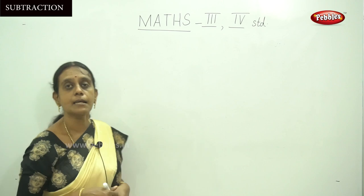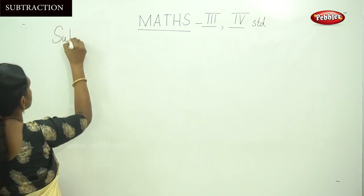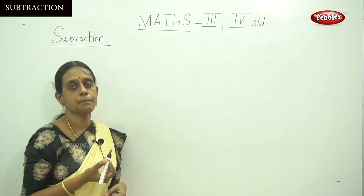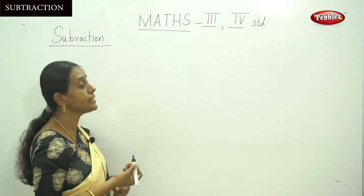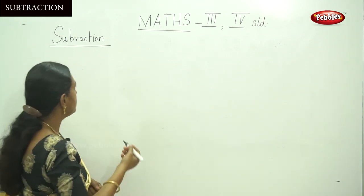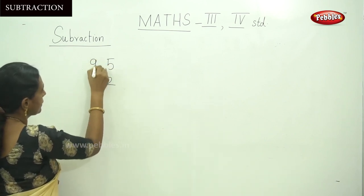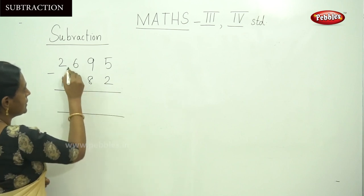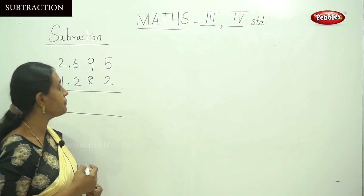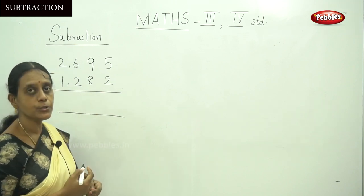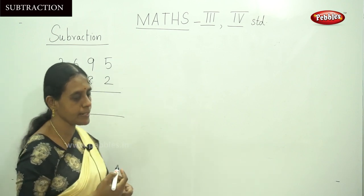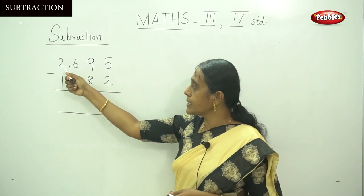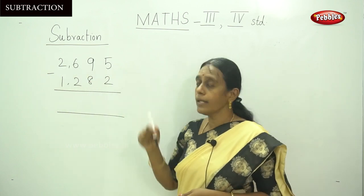Our topic is subtraction. Let me see the first simple subtraction sum and the terms used in subtraction. The first number is 2695 minus 1282. The first number, 2695, is called the minuend.